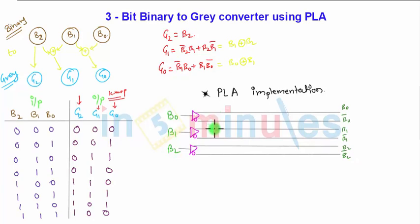For which we are going to have the product terms. Total four product terms will be required, so I have first, second, third and fourth product term. There will be AND gates required here. The first product term is B0 bar B1. The next one is B0 B1 bar, then B2 B1 bar, and the next one is B2 bar B1.